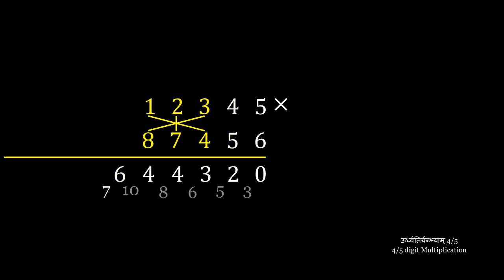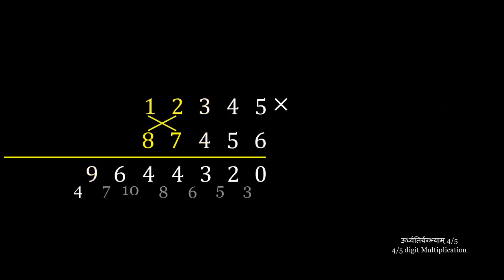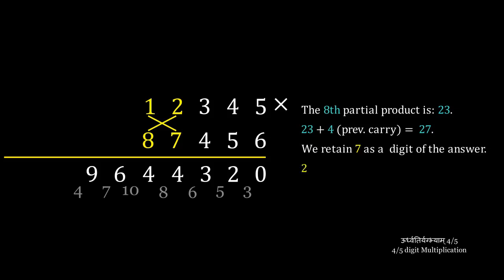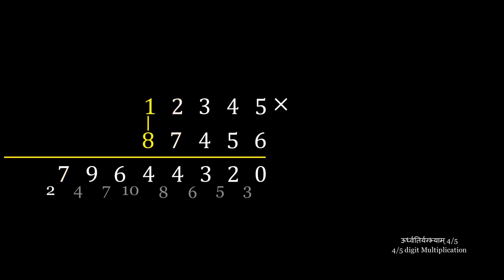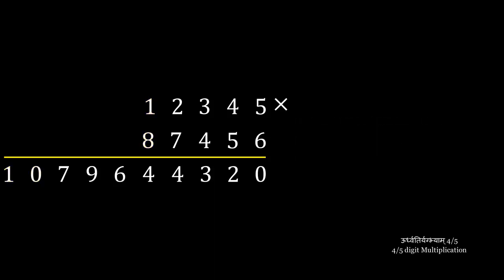The seventh partial product is a cross-multiplication of the first three digits, which is 42. Adding the previous carry, we get 49. We retain 9 and carry 4. The next partial product is a cross-multiplication of the first two digits: 7 times 1 plus 8 times 2 is 23. We add the previous carry to get 27. We retain 7 and carry 2. The final partial product is 8 times 1 plus the previous carry of 2, which is 10. We retain 10 as the rest of the answer. Thus, we have accomplished a 5-digit multiplication using Urdhva Thiryakka.